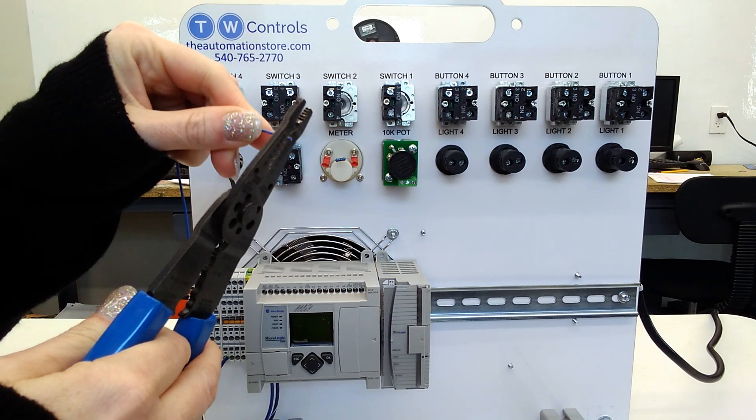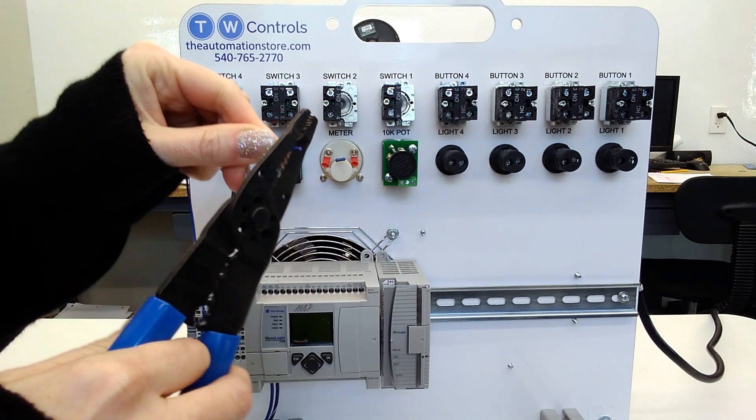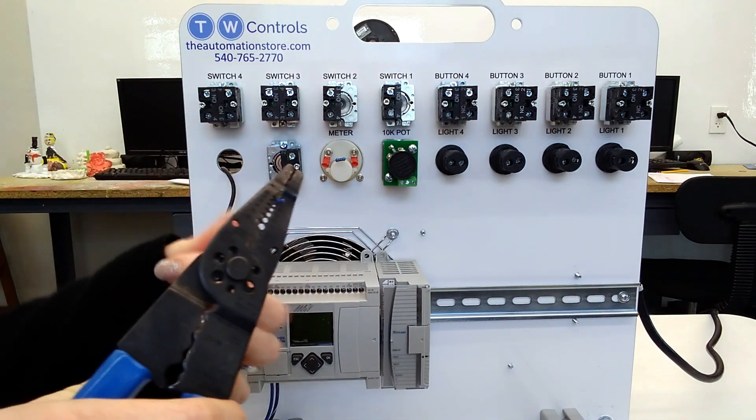Your trainer comes with pre-cut wire. To strip it, simply insert it into the proper hole, close the strippers, and pull.